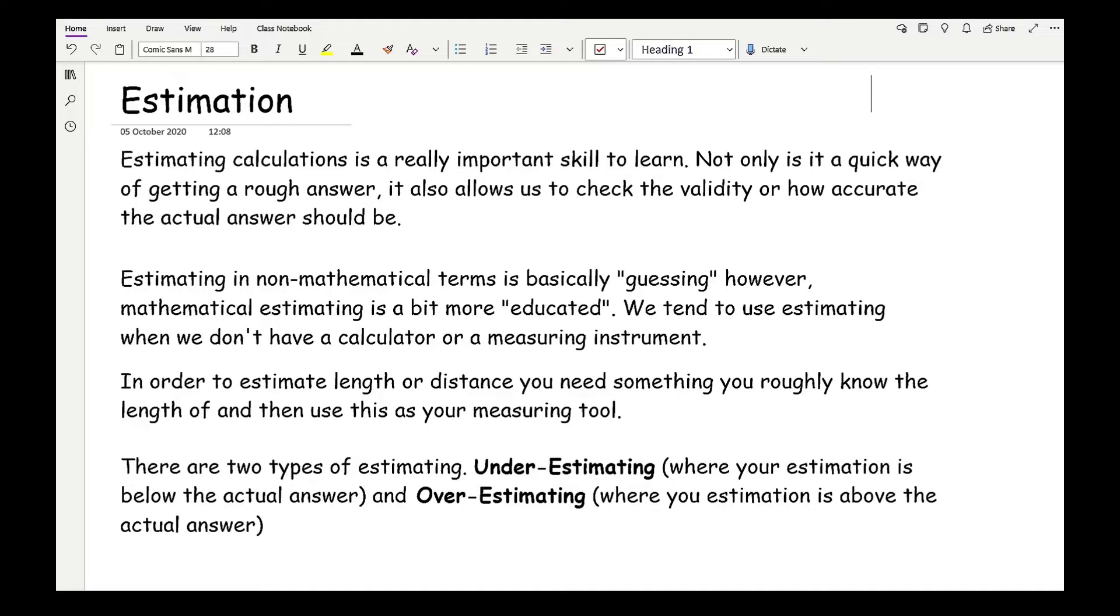In order to estimate length or distance, you need something that you roughly know the length of and then use this as your measuring tool. For example, if you don't have access to a ruler or measuring tape and you want to look at the length of a table, you may count how many of your hand spans you need to work out the length, width, or depth of a particular piece of furniture.